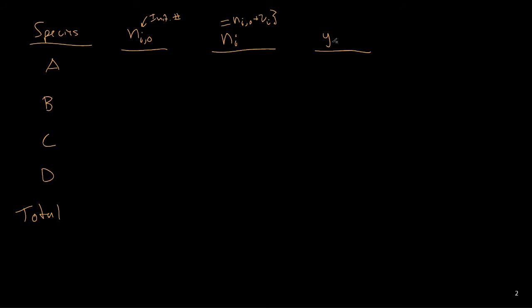This is just a formula that comes from the definition of the extent of reaction. And then we'll have a final column here, which is the mole fraction, which is going to be the moles of species i divided by the total number.